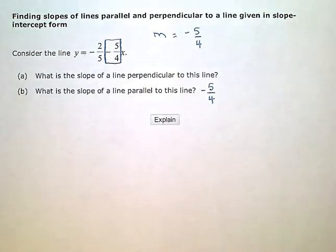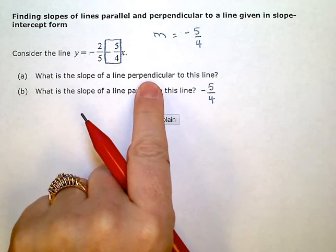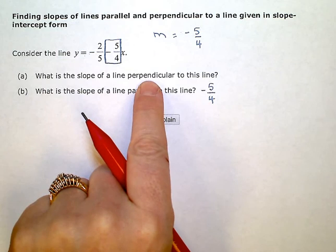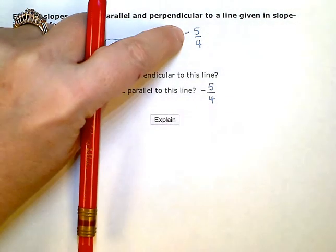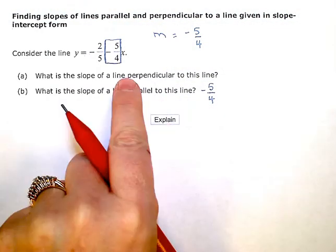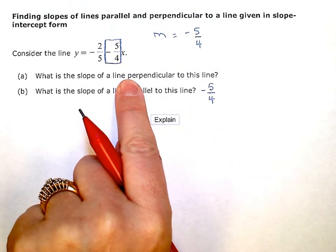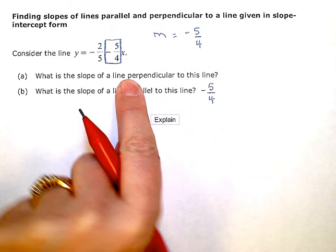Perpendicular lines have slopes that are opposite in sign and reciprocals. So if this one is negative, the slope of any line perpendicular will be positive. That's the opposite part. And then I have to do the reciprocal.